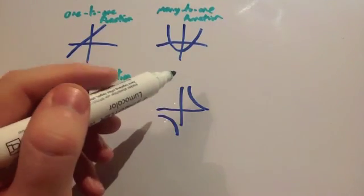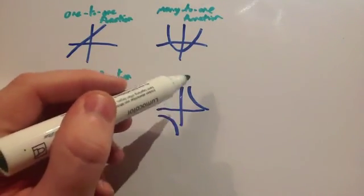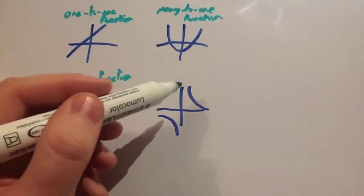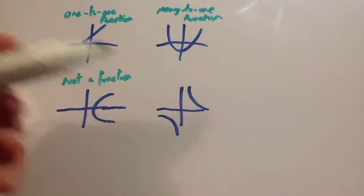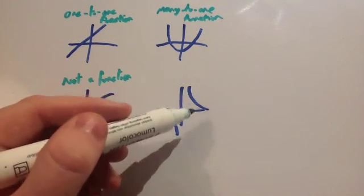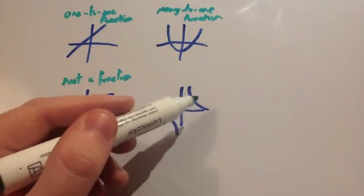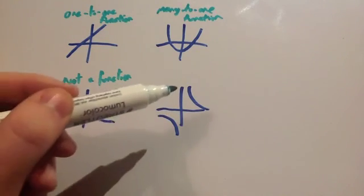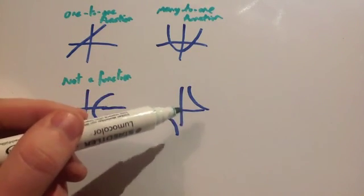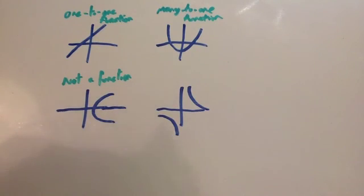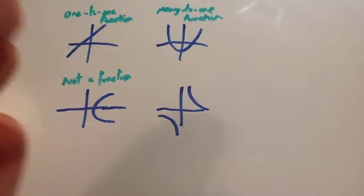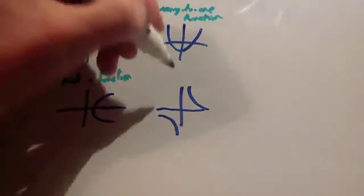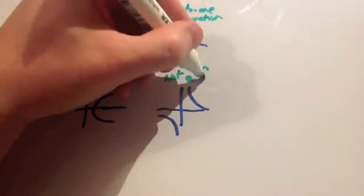Let's have a look at the y equals 1 over x graph — you've got your two sections of it. It looks like a function because every single positive value maps to exactly one value of the range, and the negative ones do too. But there's an asymptote, so 0 doesn't map to anything. The rule is every value of the domain has to map to exactly one value of the range, and 0 doesn't — so that is not a function.